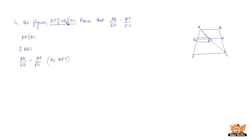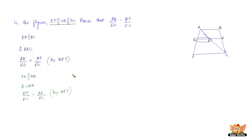Now we use the data that EF is parallel to AB. Since EF is parallel to AB, PF is also parallel to AB. So in triangle CAB, by the basic proportionality theorem, BF by FC equals AP by PC. Let's call the first result equation 1 and this result equation 2.